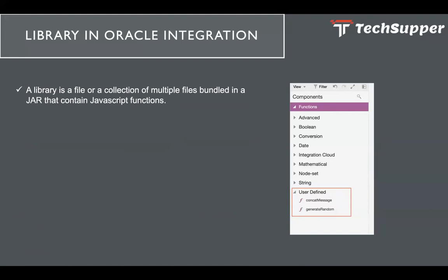Why is a library required? Oracle Integration has out-of-the-box functions as you see in this screenshot — advanced functions, boolean functions, conversion functions, date functions, integration cloud functions, mathematical functions, and string functions which can be used to transform data. Sometimes those functions do not help, and in that case you need to write custom functions. You can write custom functions in JavaScript and upload that JavaScript function into Oracle Integration to create a library.